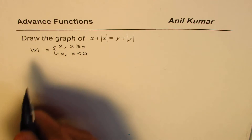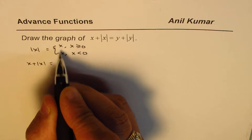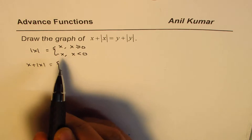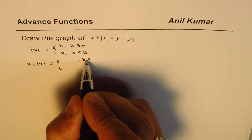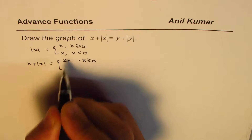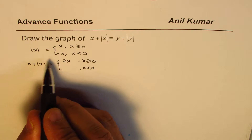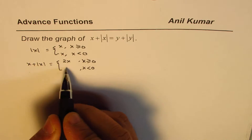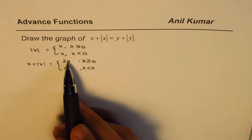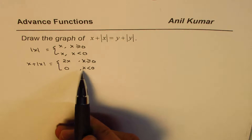In that case, the left side of this equation, x plus absolute x, could be written as a piecewise function. If x is greater than or equal to 0, then absolute x will be positive x, so x plus x will be 2x. If x is less than 0, absolute x can be replaced by minus x, and what you get is x minus x, which is 0. So x plus absolute x equals 2x if x is greater than or equal to 0, and equals 0 if x is less than 0.